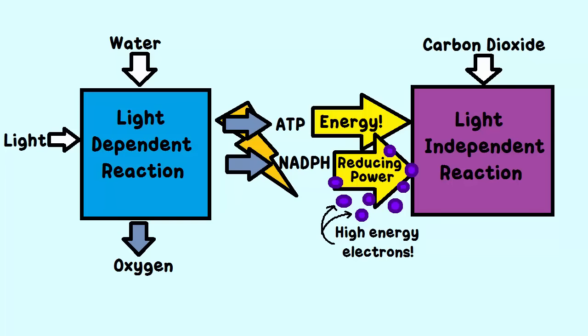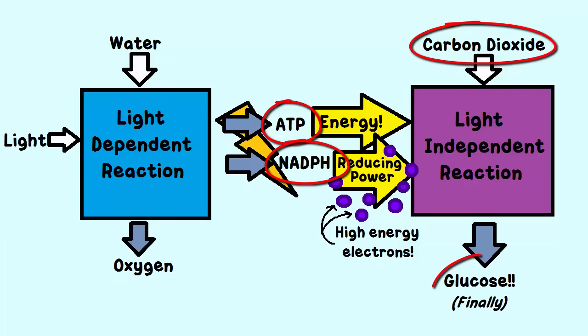So, in a very complex series of pathways, the fixed carbon dioxide, the ATP, and the NADPH are used to make a product that can ultimately be converted into glucose.